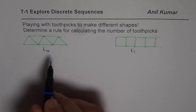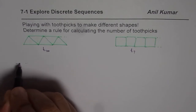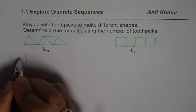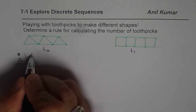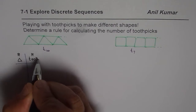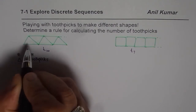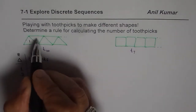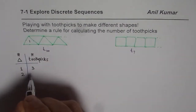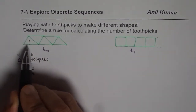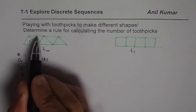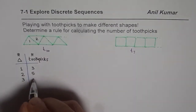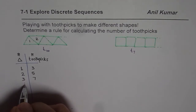One way to get to this answer is to make a table of values. We write number of triangles in one column and number of toothpicks in another. If we have one triangle, the number of toothpicks are one, two, and three. For two triangles, we already have three plus two more — so five in all. To make the third triangle we add two more, so we get five plus two as seven.